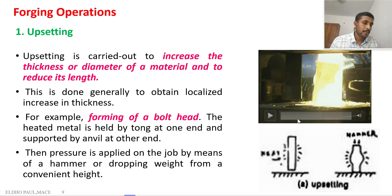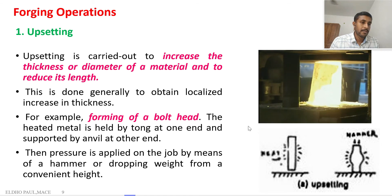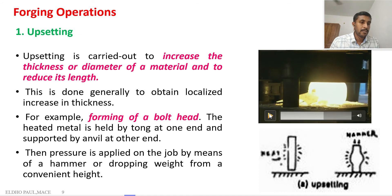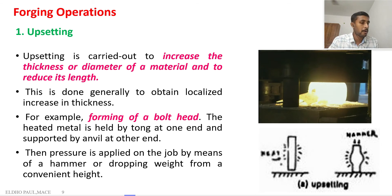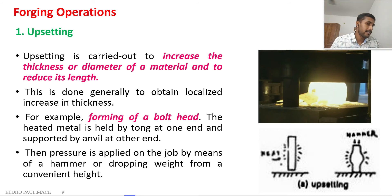In the upsetting process, we can see that after hot forging in an open die, the length is reduced and the diameter is increased. This is called upsetting. Commonly we use this upsetting process for making the head of a bolt — we decrease the length and the material shifts to increase the diameter.